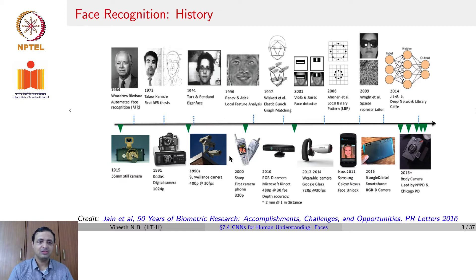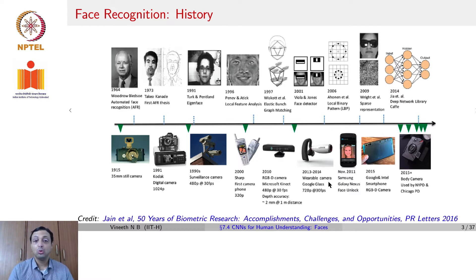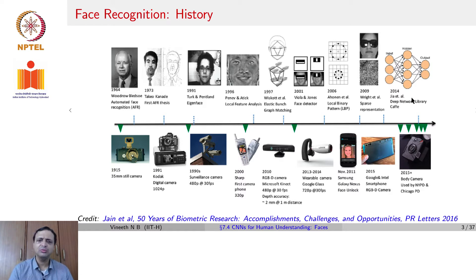From a hardware perspective, cameras began way back in 1915, with the digital camera coming in the 90s. Then face recognition shifted to surveillance cameras, camera smartphones, Microsoft Kinect based devices that you see on your Xbox, and Google Glass kind of devices towards the end of the first decade of the 21st century. In 2011, Samsung Galaxy had their face unlock feature implemented as part of the smartphone. Then came the RGBD camera and, more recently, body cameras that can do face recognition. All of this has been chronicled in a recent article known as '50 Years of Biometric Research: Accomplishments, Challenges and Opportunities'.